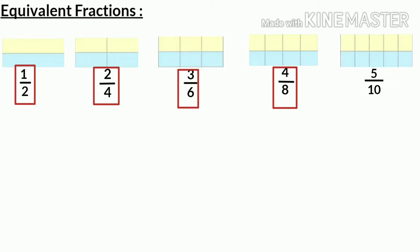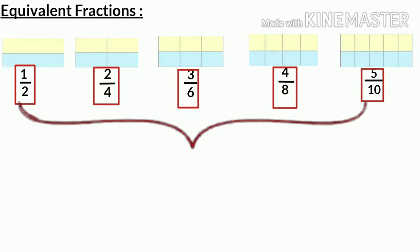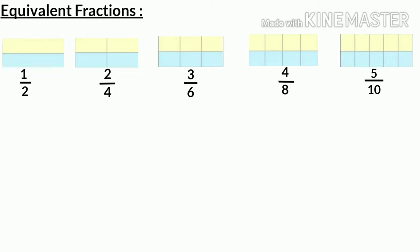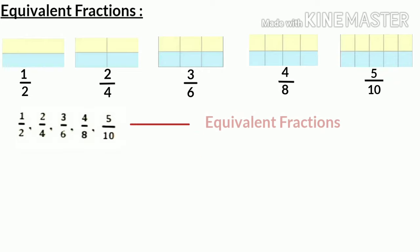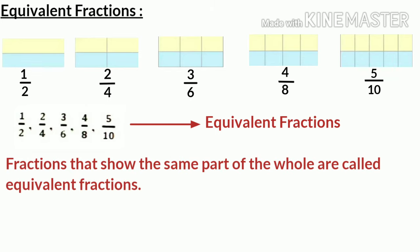Here, one half, two fourths, three sixths, four eighths, and five tenths all represent half part of the whole rectangle. These fractions are called equivalent fractions. So we can say: fractions that show the same part of the whole are called equivalent fractions. That is, one half equals two fourths equals three sixths equals four eighths equals five tenths.